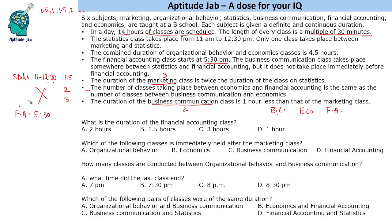This means our assumption that marketing is after statistics is false. So marketing starts somewhere before statistics. We know marketing is three hours. Now we have business communication, economics, and financial accounting after statistics. Financial accounting is at 5:30. If we take one class between economics and financial accounting, then there should be one more class on the other side, making economics exactly in between.